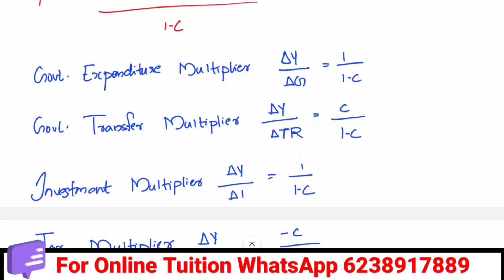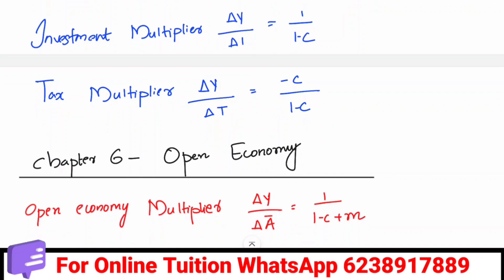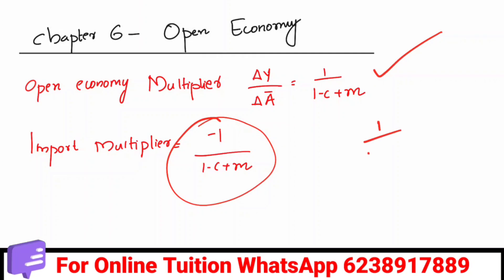The government expenditure multiplier is 1/(1−c). Government transfer multiplier is c/(1−c). Investment multiplier is 1/(1−c). Tax multiplier is −c/(1−c). In the open economy, the important multiplier is 1/(1−c+m), and the import multiplier is −1/(1−c+m). Investment multiplier in the open economy is 1/(1−c+m).